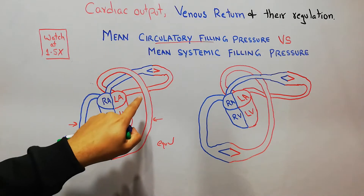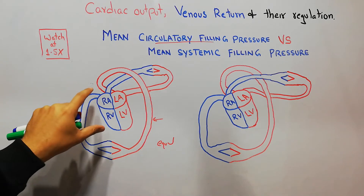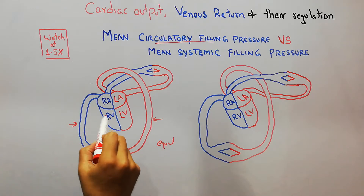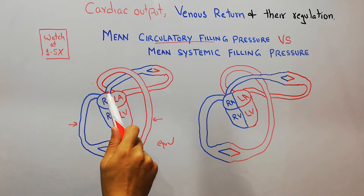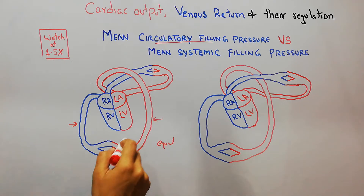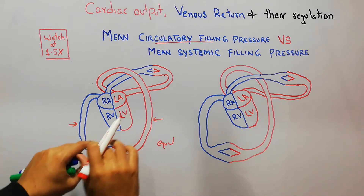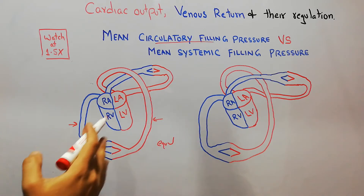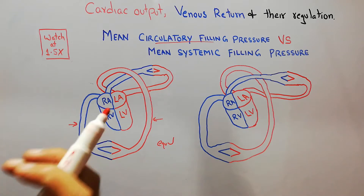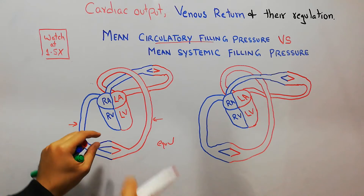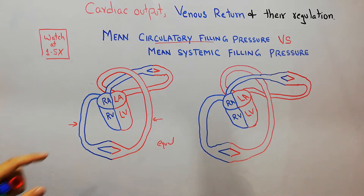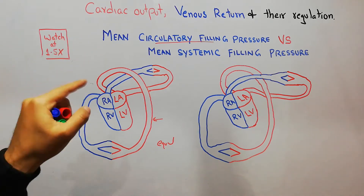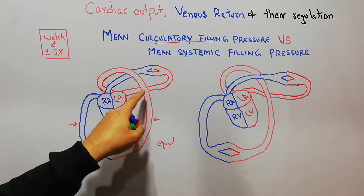The mean circulatory filling pressure can be measured at any point in the circulatory system — it can be calculated or measured in the systemic vessels as well as in the pulmonary vessels. When heart pumping is stopped, blood flow ceases, arterial and venous pressures equalize, and that specific pressure level is the mean circulatory filling pressure, measurable anywhere in the circulation.